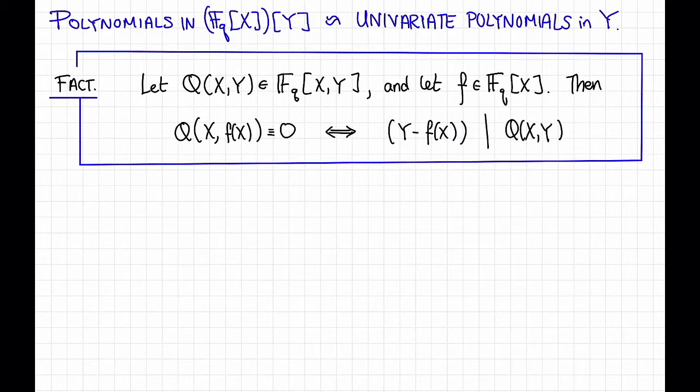It's sometimes useful to think about bivariate polynomials as univariate polynomials with coefficients that are themselves univariate polynomials, because nice things happen for univariate polynomials, and those same nice things can happen for bivariate polynomials when viewed this way. In particular, here's a true fact. Suppose Q(X,Y) is a bivariate polynomial over F_q, and let F be a univariate polynomial in X. Then Q(X, F(X)) = 0 is equivalent to saying that Y - F(X) divides Q(X,Y).